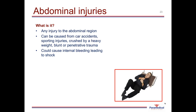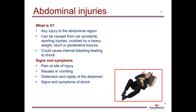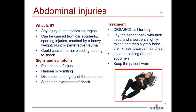Abdominal injuries can be caused by car accidents, sporting injuries, crushing by a heavy weight, or blunt or penetrating trauma to the abdomen, and can cause severe internal bleeding leading to shock. Signs and symptoms include pain at the site, nausea or vomiting, distention or rigidity of the abdomen, or signs of shock. Treatment involves DRS ABCD, calling for help, and positioning the patient with head and shoulders slightly raised and knees slightly bent toward the chest in a fetal-like position to take pressure off the abdomen. Loosen any clothing around the abdomen and keep the patient warm until the ambulance arrives.